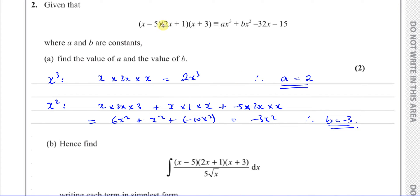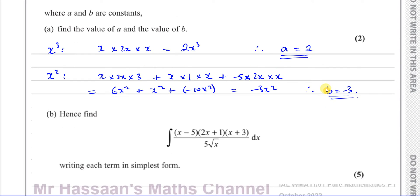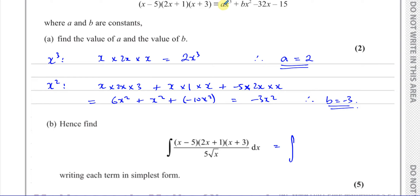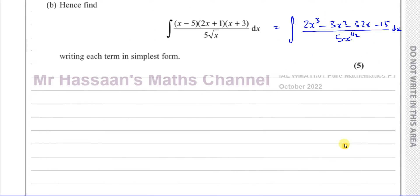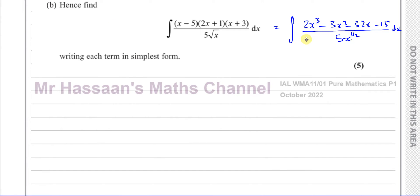Now, what you'll notice is that what we have in this expression that we've expanded — we know what the expanded form is now. It's exactly the same as what's on the numerator over here. So the first thing we can do is replace this with its expanded form. So we can say that this is the same as the integral of 2x cubed minus 3x squared minus 32x minus 15, all over 5 times x to the power of a half — I'll write this as 5 times x to the power of a half just to get it ready — and that's integrated with respect to x. So I know that these are the same thing. Now I'm able to try to integrate this. I have to express this as separate terms, so the first stage is to expand the brackets, which we have the expansion for. That's why it says hence — hence means using what you've just done.